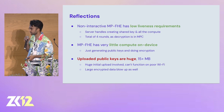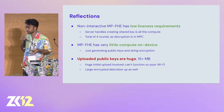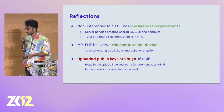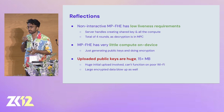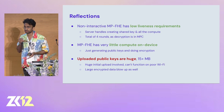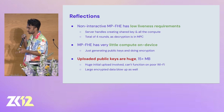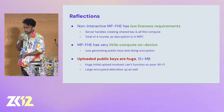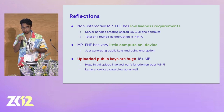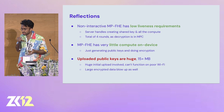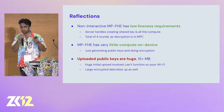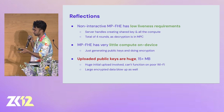One huge downside of FHE schemes in general, especially in the multi-party setting, is that the uploaded public keys are huge. To get 128 bits of security, you usually require keys in the tens to hundreds of megabytes. If you're trying to set this up in an app experience, this is a huge load to upload, even on good Wi-Fi, but especially on conference Wi-Fi or mobile data. There's also a huge blow-up in the data you're encrypting because you're adding all this noise to make it fully homomorphic. So that brings us to Trinity.